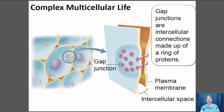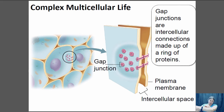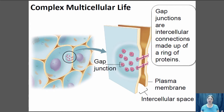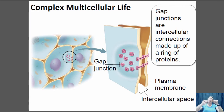Another thing is that if you are multicellular, your cells have to be able to stick together and communicate with each other. If you're a multicellular organism, you don't want your cells to come apart — things have to stay together. A skin cell needs to communicate with the next skin cell. In animals, we have gap junctions: intercellular connections made up of a ring of proteins that hold cells together and also allow them to transfer chemical information back and forth between cells.